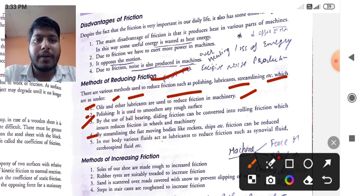The fourth one is, by streamlining the fast moving bodies, like rocket, ships, etc, friction can be reduced.